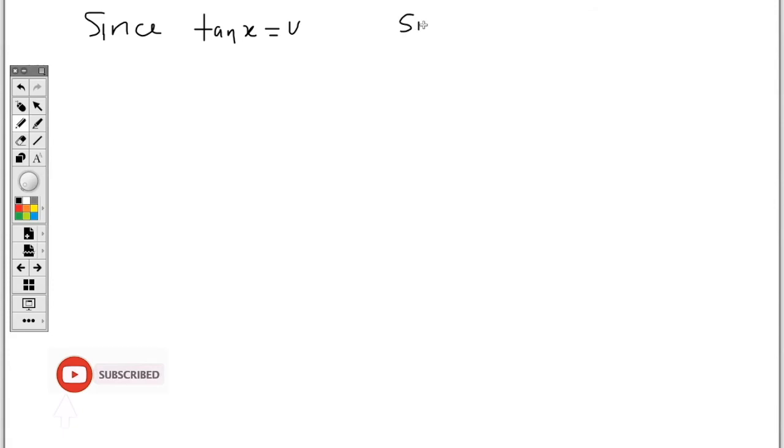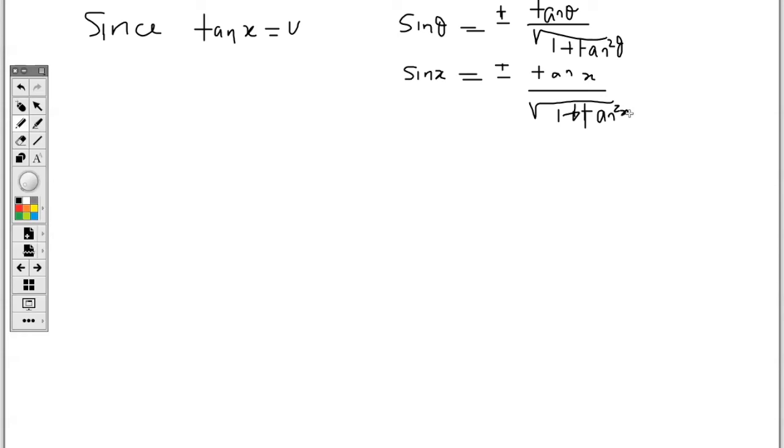So sin theta is equal to plus or minus, and this is the trig identity for it: tan theta over square root of 1 plus tan squared theta. So it means if I have tan x, it's going to be the same thing. It's just that instead of having theta, I am going to have x. This is a trig identity for sin theta.